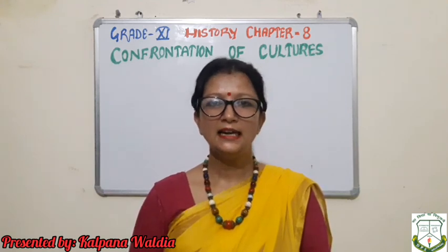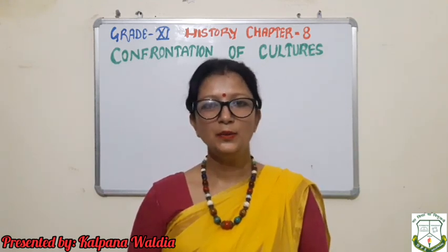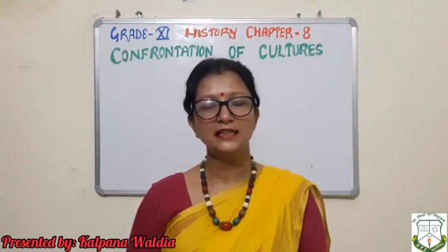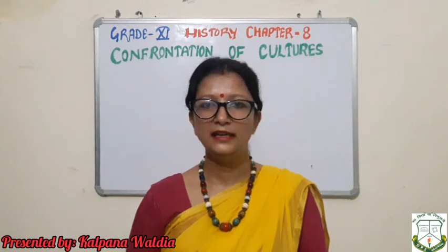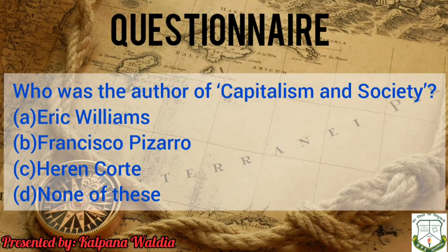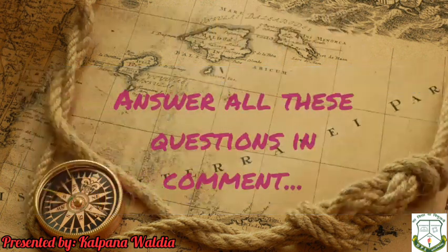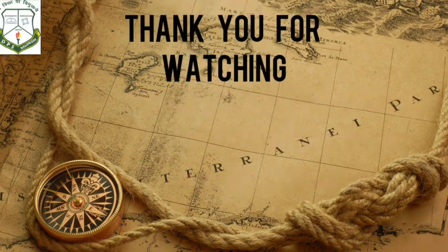This is the end of the chapter. Hope you enjoyed and learned from it. I request you to please go through the NCRT textbook to understand this complete theme clearly. Let us do some questions: Who was the author of 'Capitalism and Slavery' — Eric Williams, Francisco Pizarro, Hernan Cortes, or none of these? Which country is called Latin America — North America, South America, Africa, or none of these? Answer all these questions in the comments. Thank you for watching.